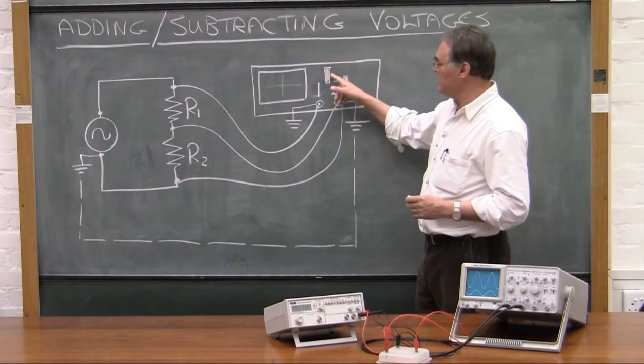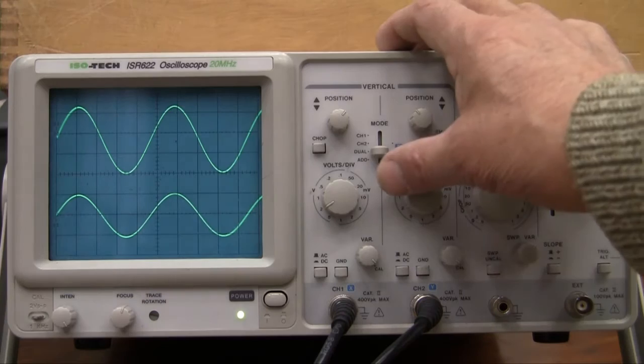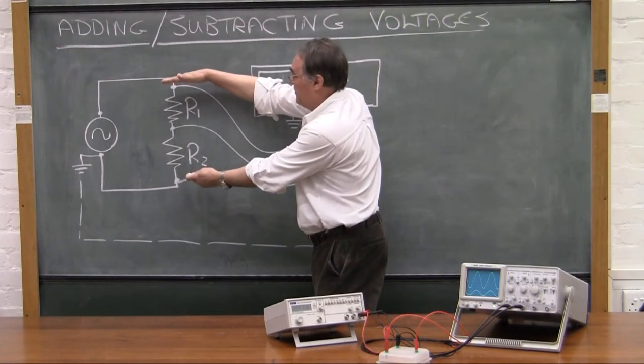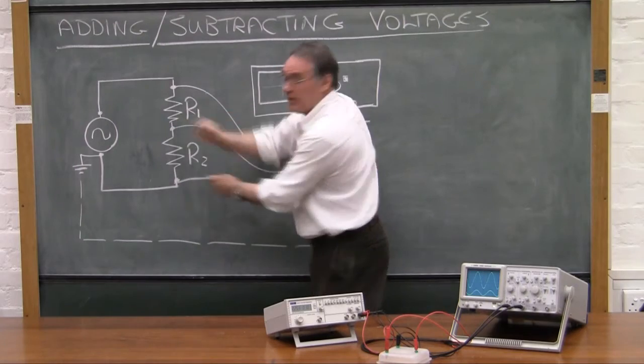By adjusting this selection switch, I can either have a look at, by selecting channel 1, I will see the voltage that goes in on channel 1. And if I select this to channel 2, I'll see the voltage on channel 2.